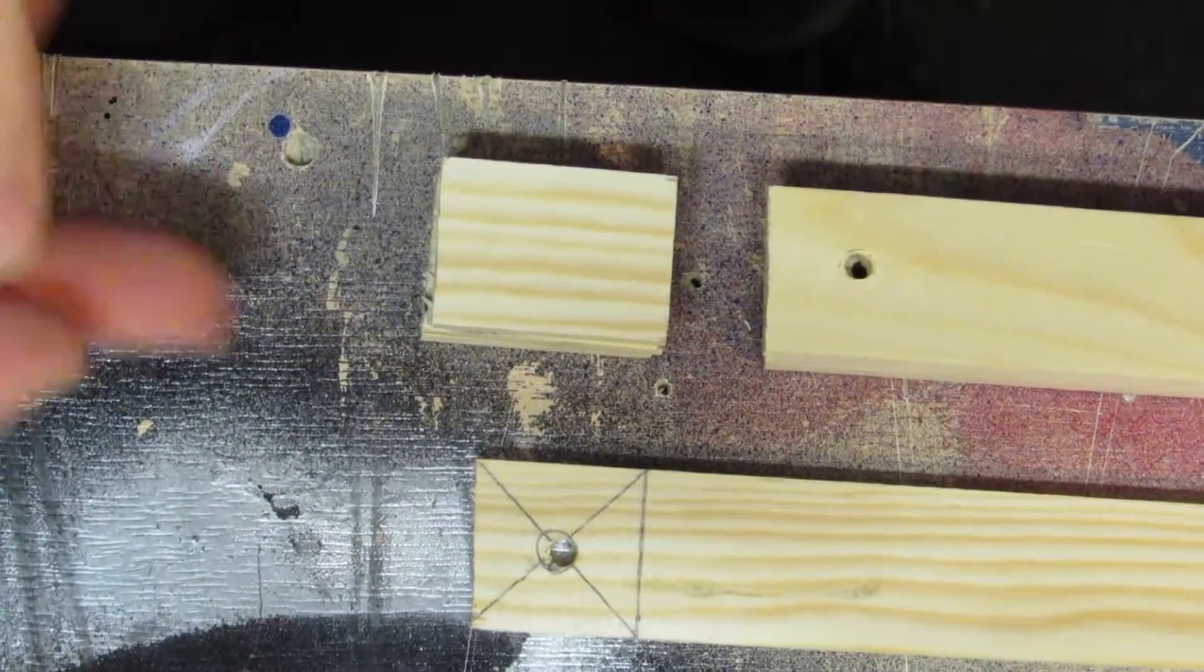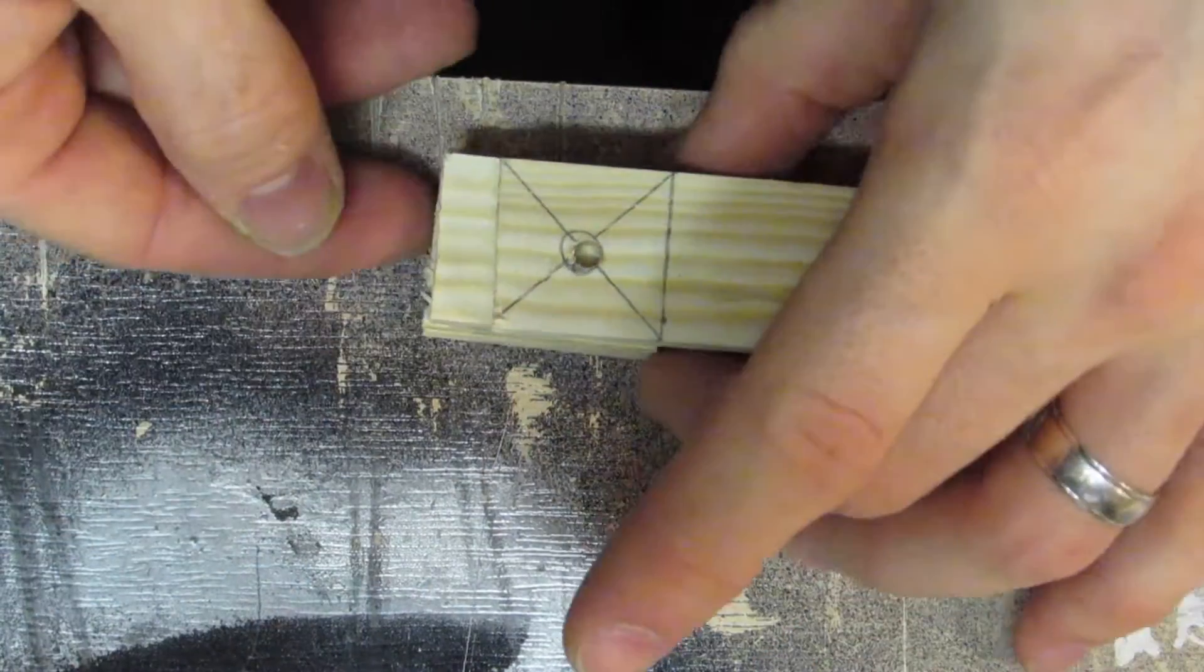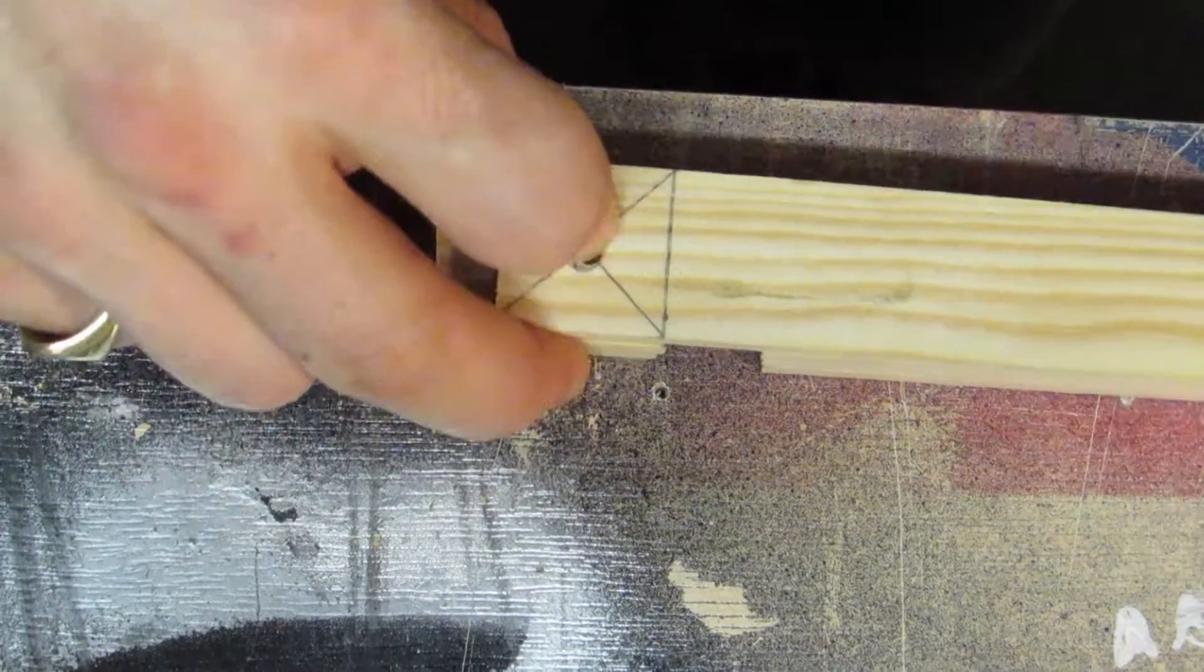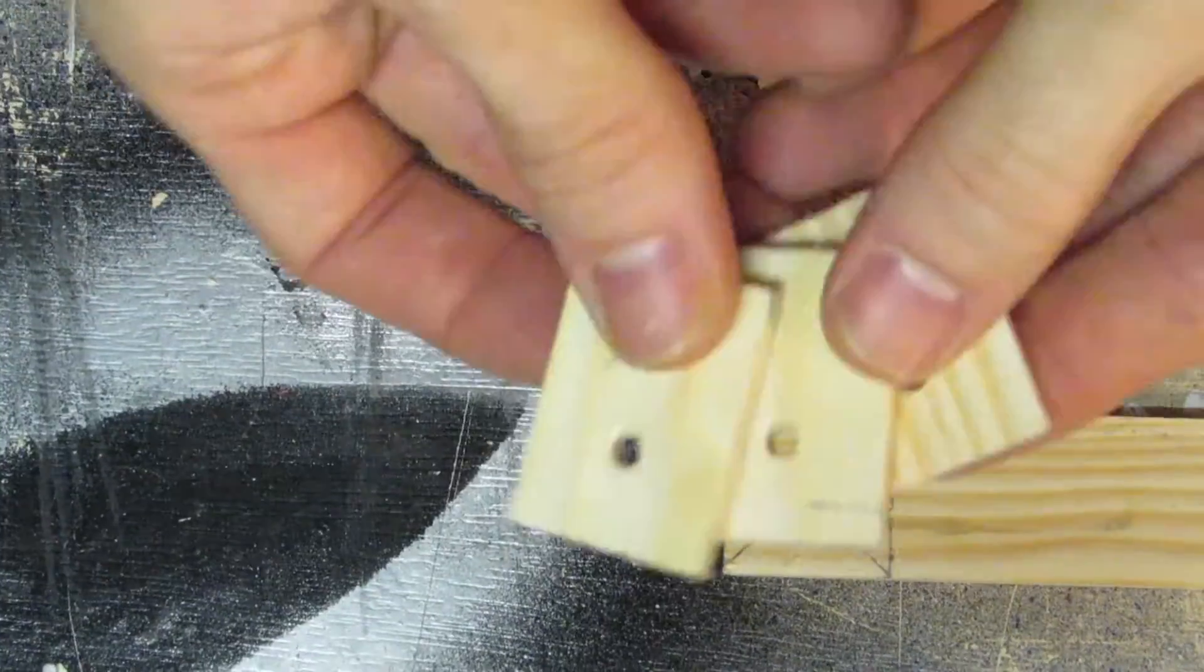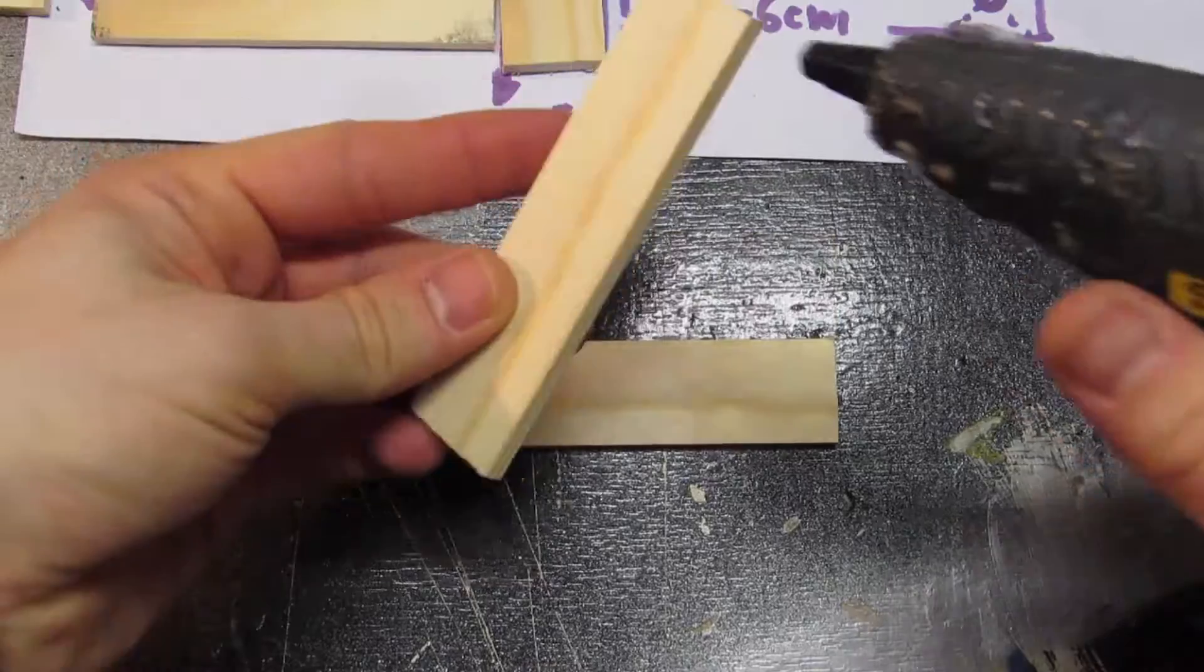Then take your 3.5cm pieces and line them up with one of the holes you've just drilled. Support it with some other pieces of scrap wood and clamp it all down. Then drill through that hole and it will provide the right holes for our 3.5cm supports.